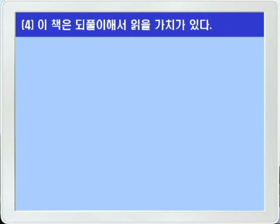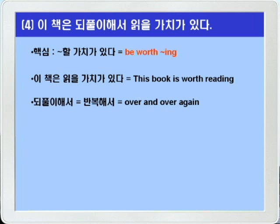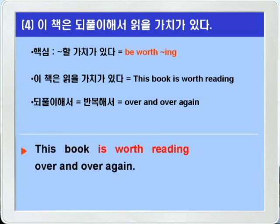4번: 이 책은 대풀이에서 읽을 가치가 있다. '~할 가치가 있다' 하면 'be worth -ing'를 쓰면 되겠죠. '이 책은 읽을 가치가 있다' 아주 간단하게 됩니다. 'this book is worth reading' 이렇게 쓰면 되겠어요. '대풀이에서, 반복해서'는 'over and over again' 이것을 쓰면 됩니다. 이 표현 꼭 기억을 해두십시오. 정답: 'This book is worth reading over and over again.'